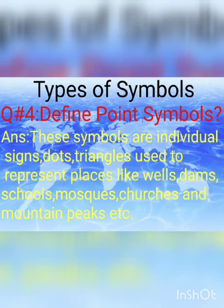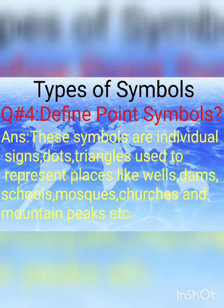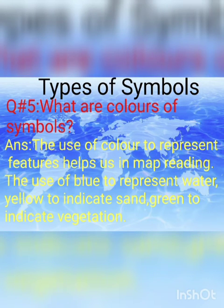The fourth question: define point symbols. Point symbols کیا کرتے ہیں؟ اس کا answer ہے — these symbols are individual signs: dots, triangles used to represent places like wells, dams, schools, churches, mosques, and mountain peaks, etc. یعنی یہ کسی بھی country میں different places کو show کرتے ہیں as a symbol on the map.